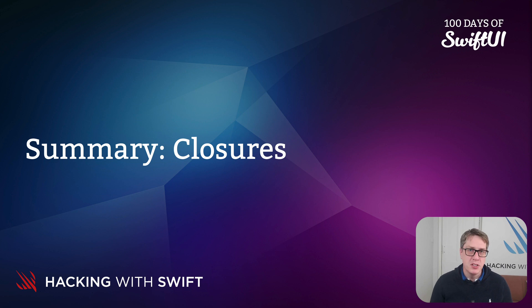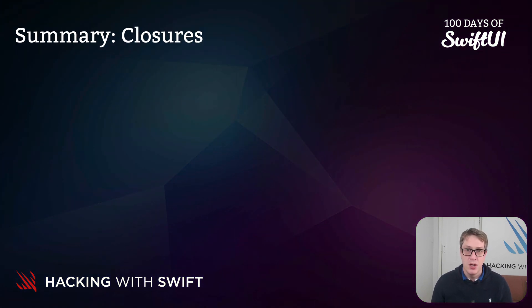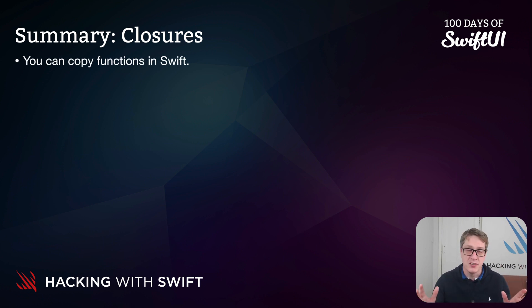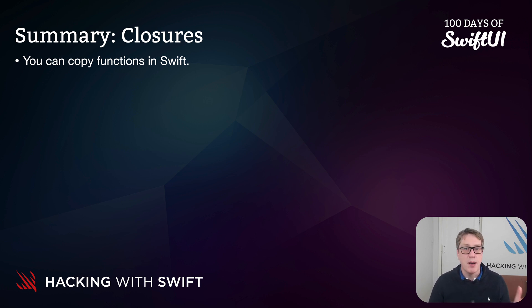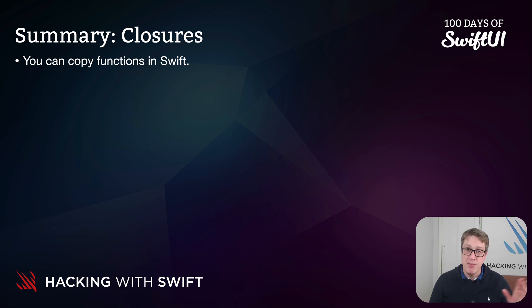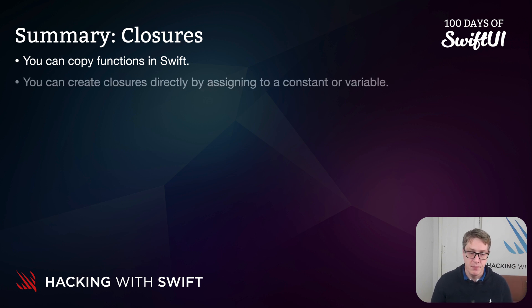We've covered lots about closures in the previous videos, so let's recap. First up, you can copy functions in Swift and the copies work just like the originals minus their parameter names externally. Remember, functions have types just like Int, Bool, String, Double, and more — that means the values they receive in parameters and the one they send back, which might be void meaning nothing at all.